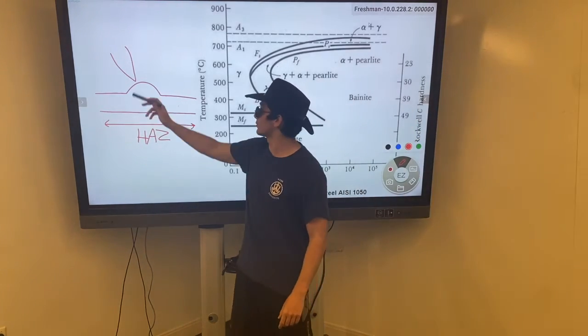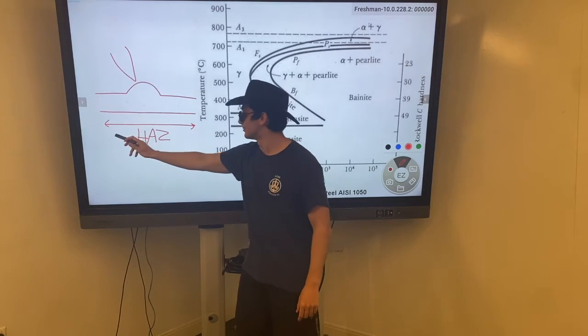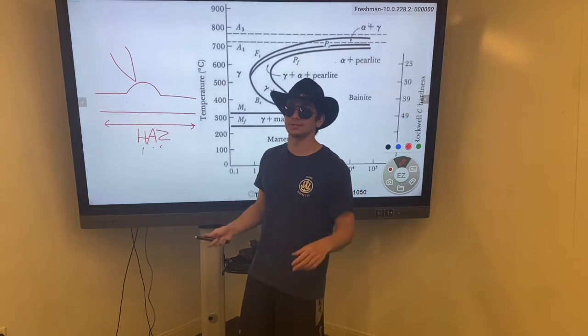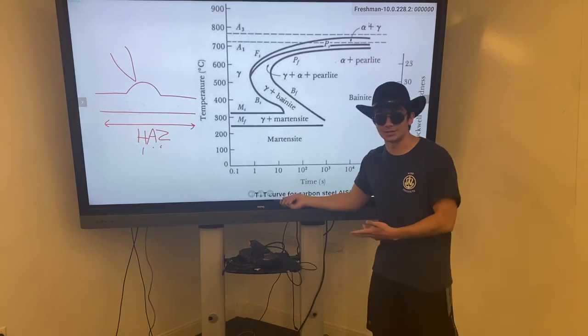Let's look at this weld. Here's a weld tip, weldment, pass, heat affected zone. Now, what happens in it? Let's use TTT diagram.